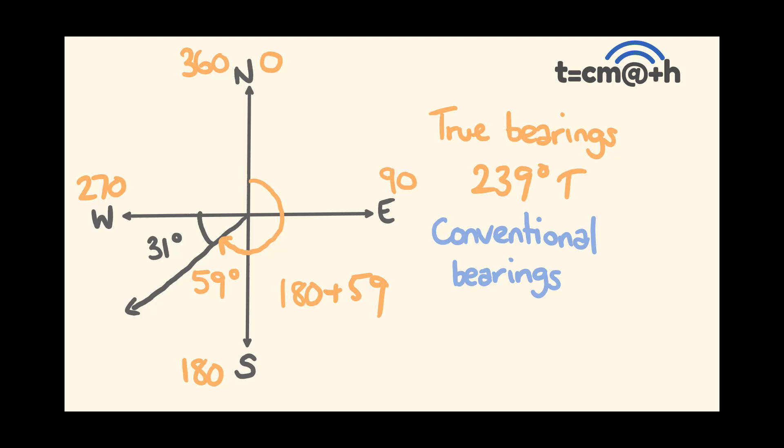What about our conventional bearings? We're facing in a more south direction. South, we've moved 59 degrees, as we've already worked out. And we've moved in a westerly direction. There you go. That's a conventional bearing.